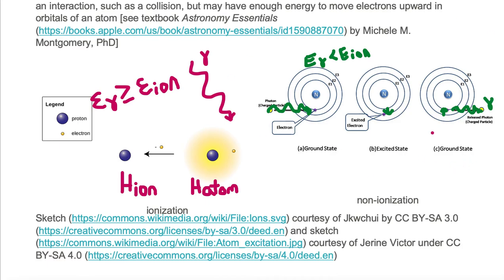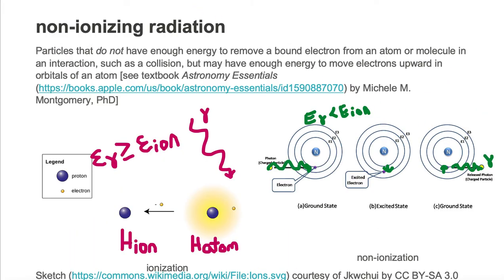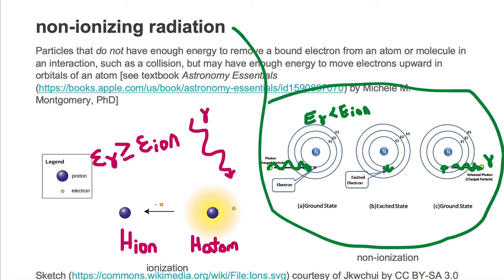In the case on the right, we have non-ionizing radiation. Non-ionizing radiation are particles that do not have enough energy to remove a bound electron from an atom or molecule. Here we're looking at a photon or another particle that is coming in to an atom.